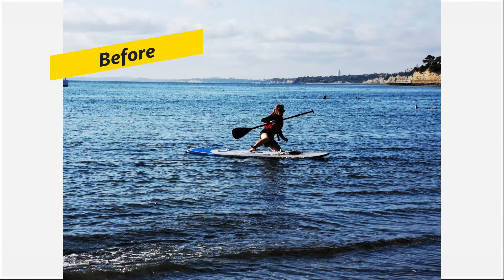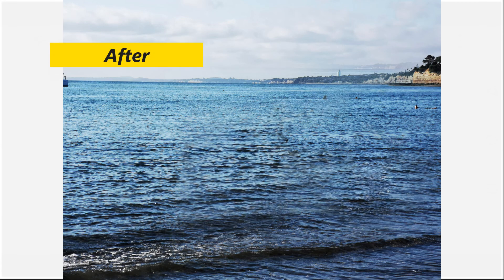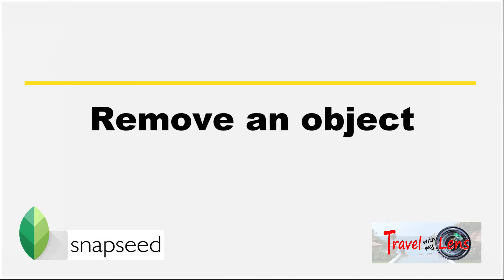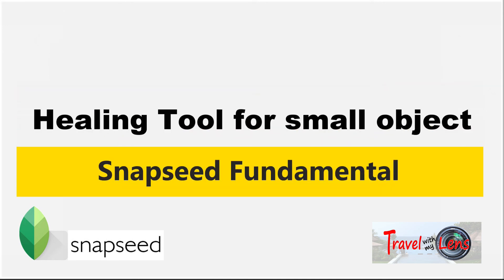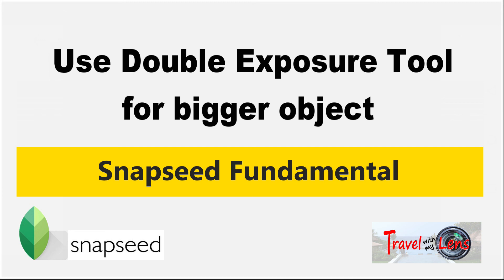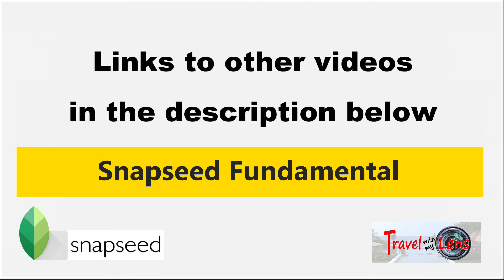This is the before and after — the object is gone. That's how to remove an object using Snapseed. The easiest way to remove a small object is by using the Healing Tool. It is far better to use the Double Exposure Tool if the object is big. There are other videos in this Snapseed Fundamental series, with links included in the description below. That's all for today.